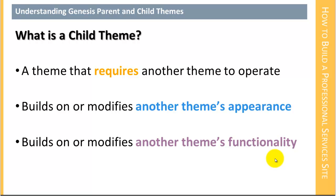If you're familiar with Thesis, you know it has many, many options you can set that change the appearance of your site — whether it's font size, font color, columns, or really hundreds of potential settings. Genesis doesn't have settings like that. Genesis relies on child themes to bring that kind of functionality. For that reason, most people don't use Genesis alone — most people use Genesis with a child theme, and the authors of Genesis expect you to use a child theme to make Genesis do what you want.